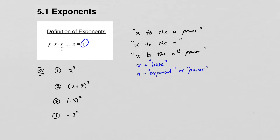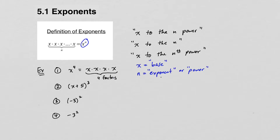Take the first example: we would read this as x to the fourth power, or x to the 4, and it means quite simply x times x times x times x. Notice that what we have here are four factors of x.